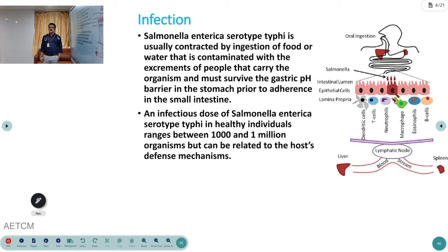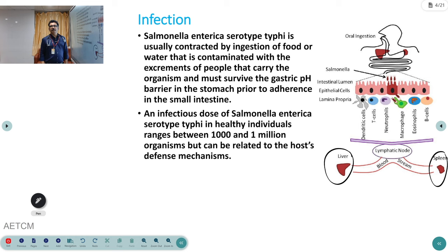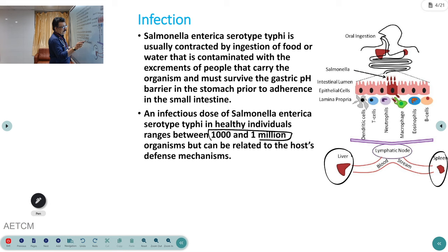From the Peyer's patches, the bacteria go to the bloodstream producing septicemia, clinical fever, hepatomegaly, and splenomegaly. They then spread to various parts of the circulation. Around 1,000 to 1,000,000 bacteria can produce typhoid fever after entering the intestine.